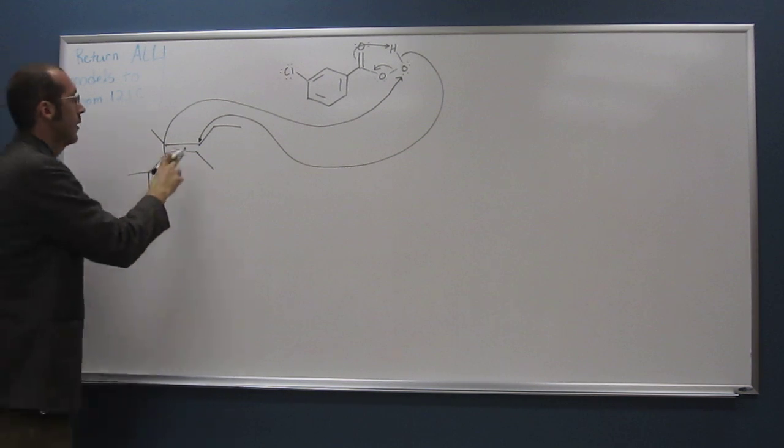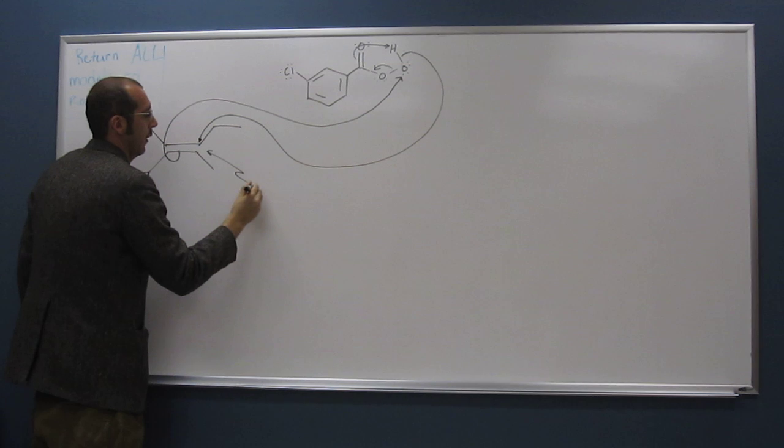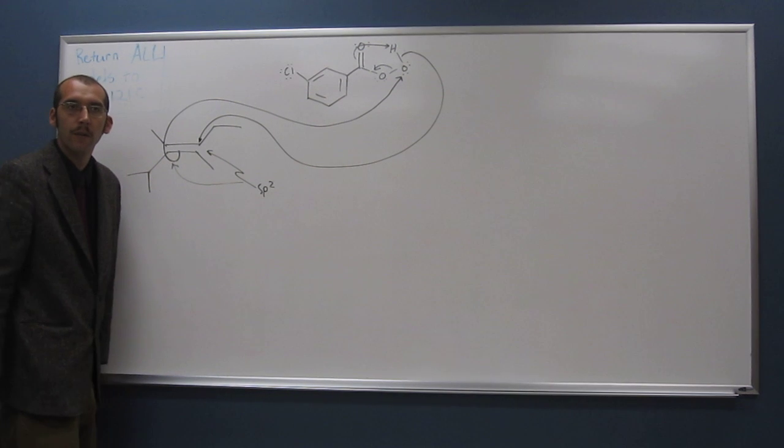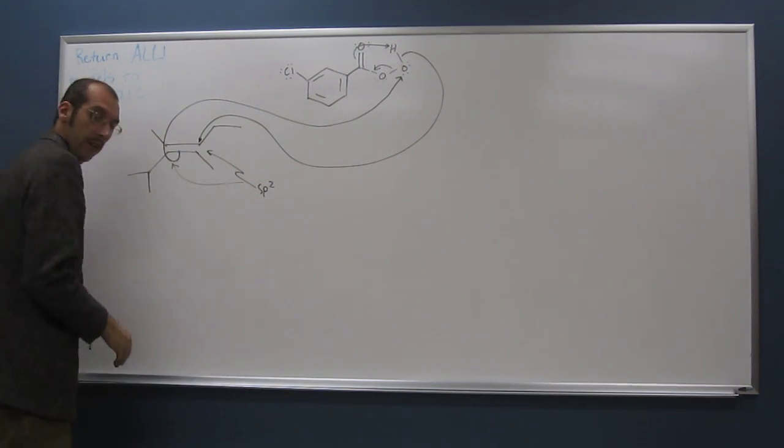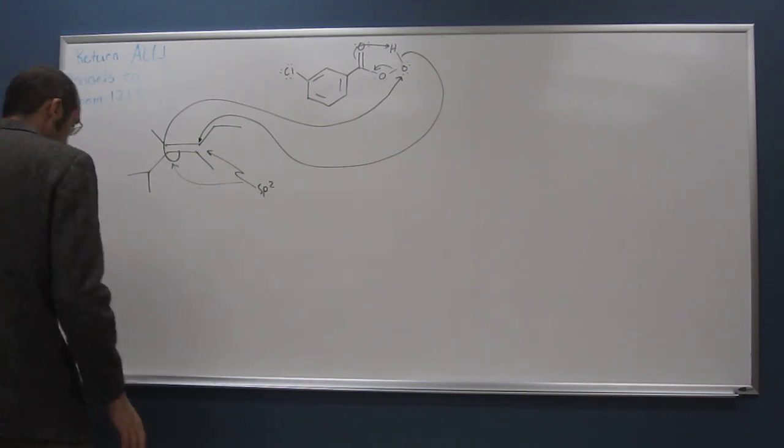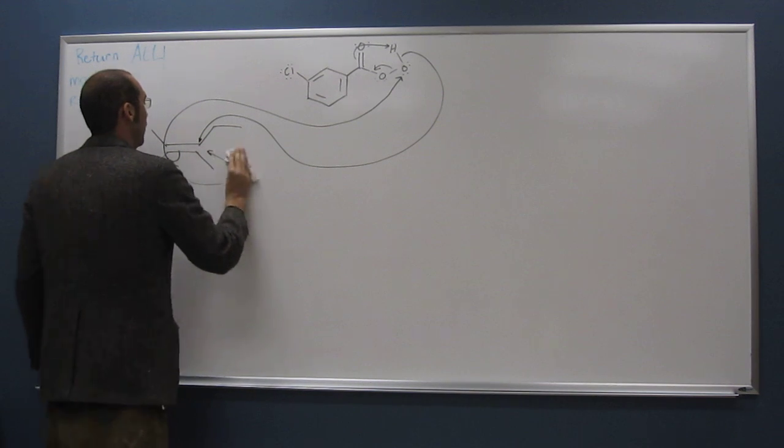So anyways, this carbon is sp2, of course. This one, too, is sp2. So trigonal planar, right? So flat, flat. So it can attack from either side. So you're going to get the two enantiomers here.